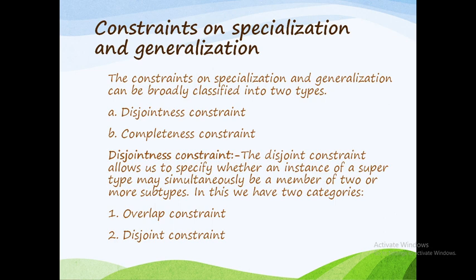For generalization and specialization, there are two types of constraints with two different classifications. The first one is the disjointness constraint and the second one is the completeness constraint.